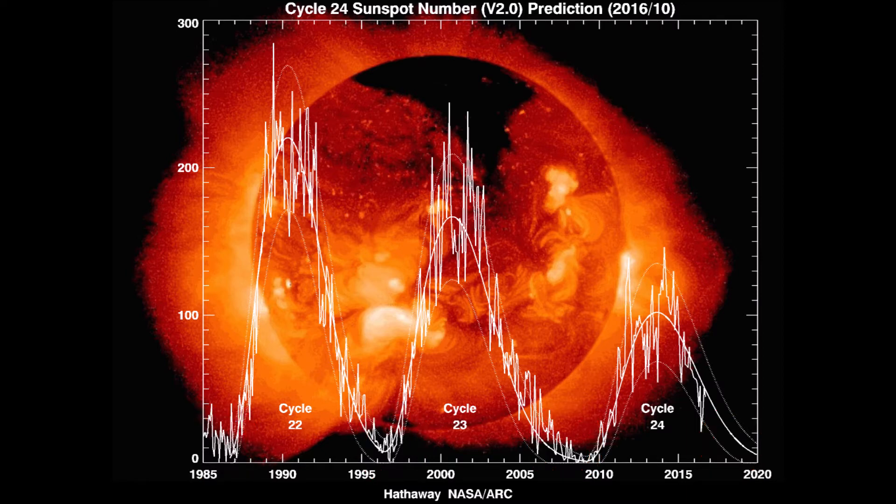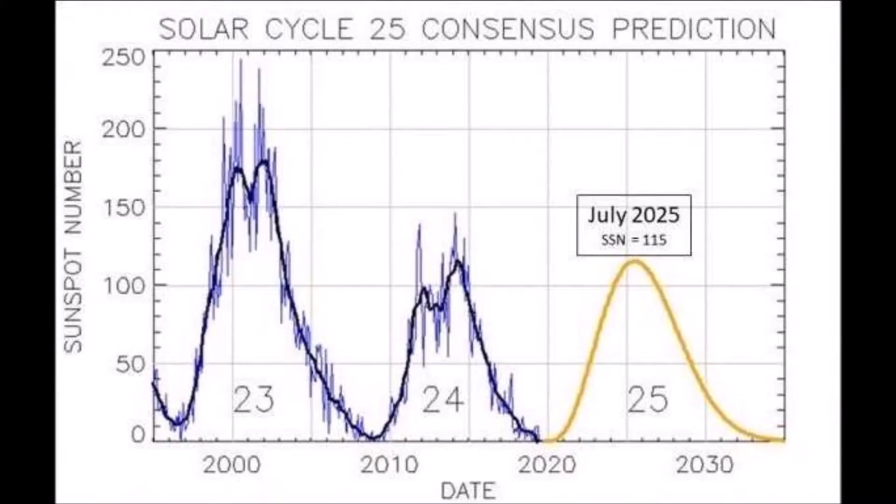However, at solar maximum, the sun can have multiple flares and or CMEs in a single day. As of October 2020, we have just entered the new solar cycle. The next solar maximum is predicted to occur in 2025, and the likelihood of a flare or CME hitting us between now and the next solar minimum is high.